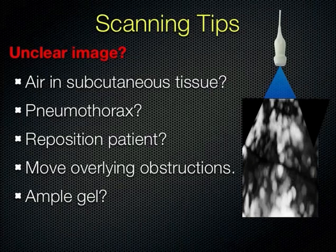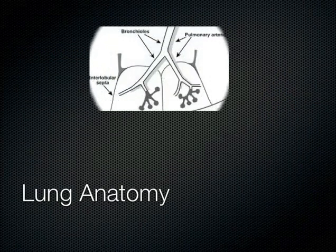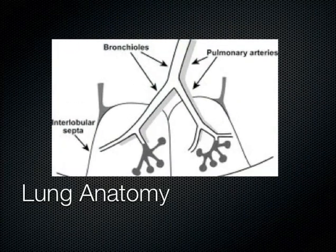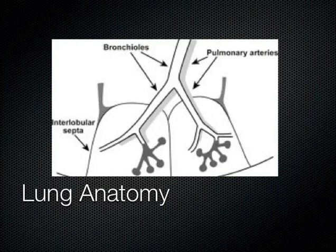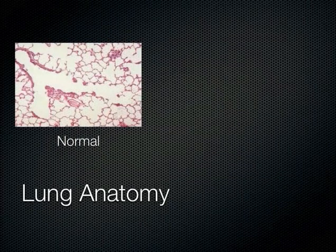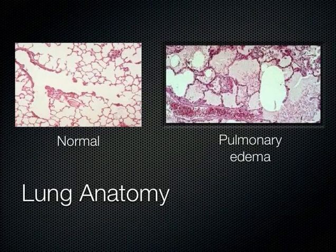Looking at the overall picture is important. Briefly reviewing lung anatomy: we're really interested in what's at the periphery. Terminal bronchioles branch into the alveoli, divided from each other by interlobular septi. In a normal lung you can see the terminal bronchiole and alveolar sacs. In pulmonary edema, the air is replaced by fluid, and the interstitium is notably thicker — that's important to note.